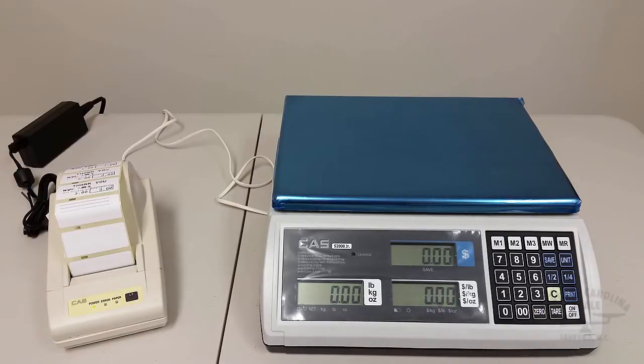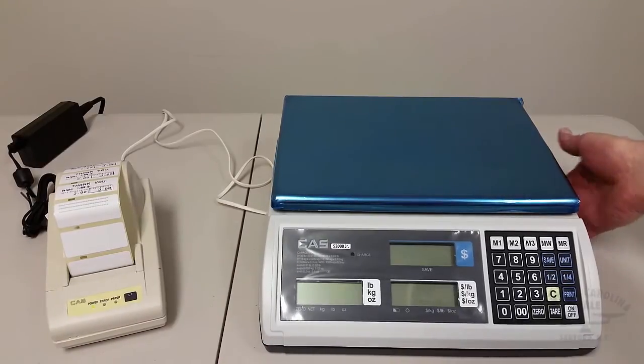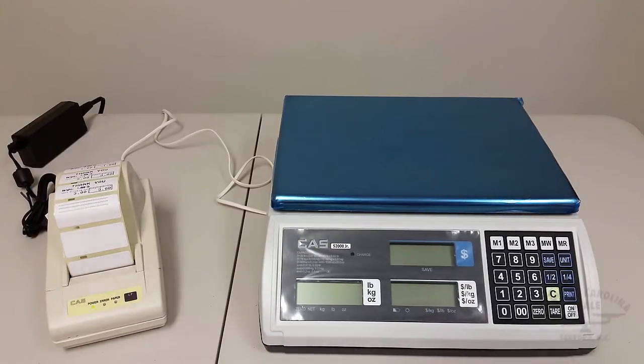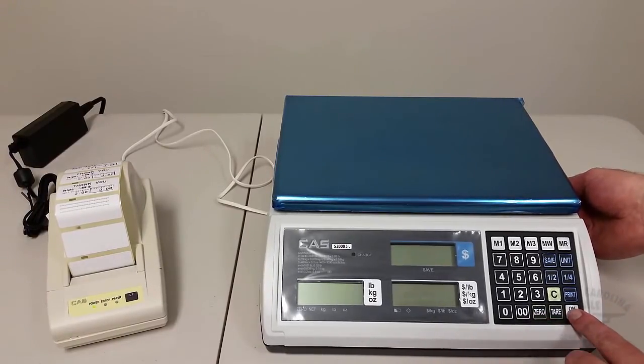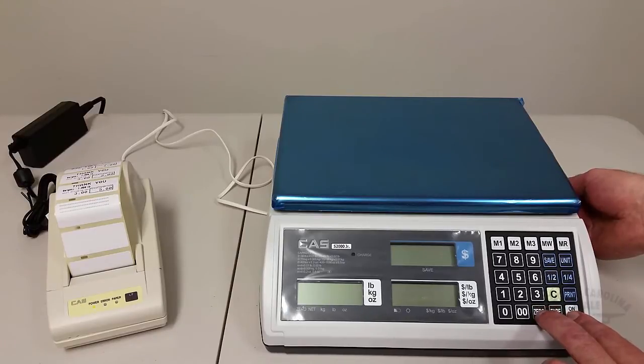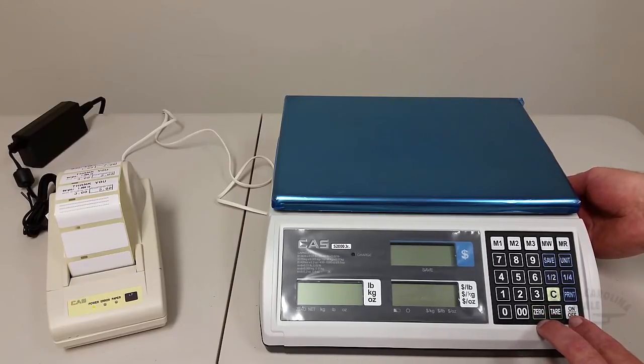So how we do this is we go into the user setup mode, and the easiest way to do that is turn the scale off, and what you have to do is press the on-off button and the zero key while you power the scale back up.